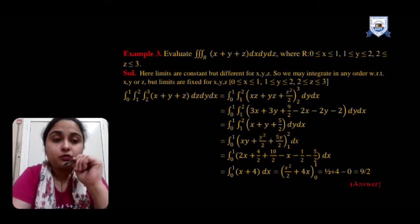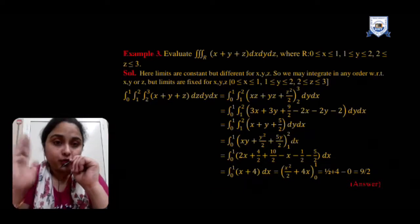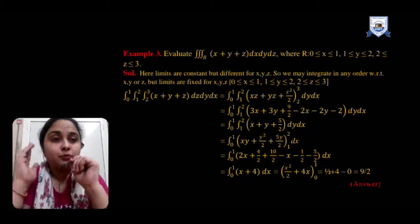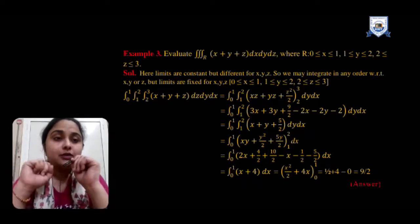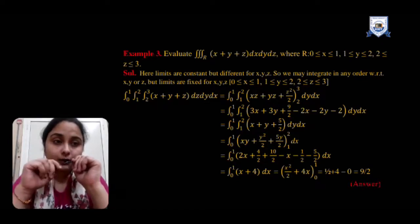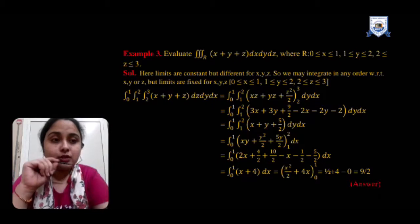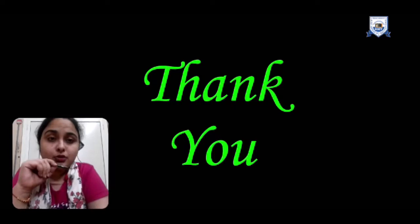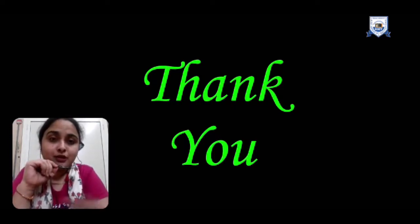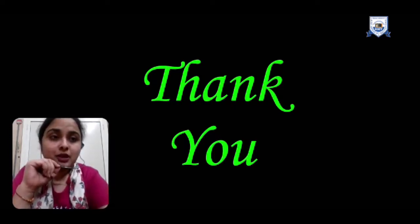Integrating x + 4 finally with respect to x over the limit 0 to 1, we get x²/2 + 4x over the limit 0 to 1. Simplifying gives the answer 9/2. This is all from my side to introduce you to triple integration. I hope it will help you out — thank you so much, have a nice day.